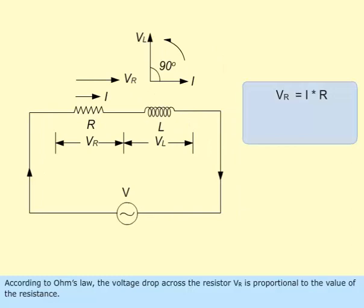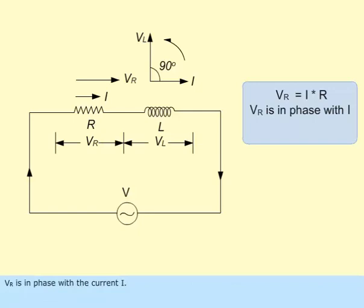According to Ohm's law, the voltage drop across the resistor VR is proportional to the value of the resistance. VR is in phase with the current I.